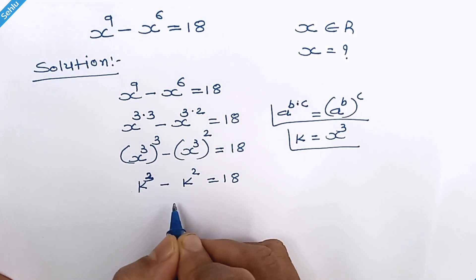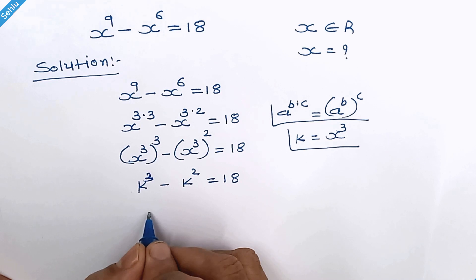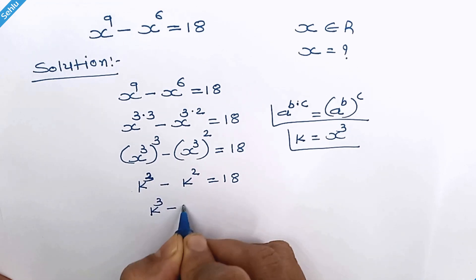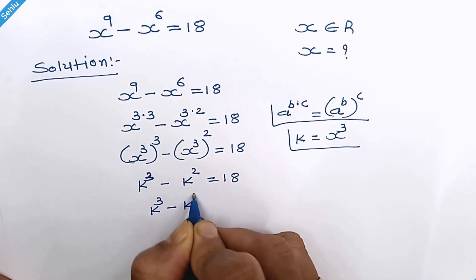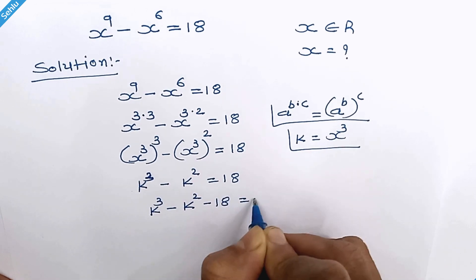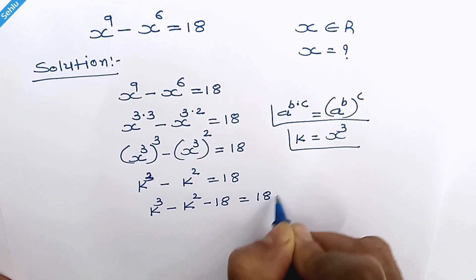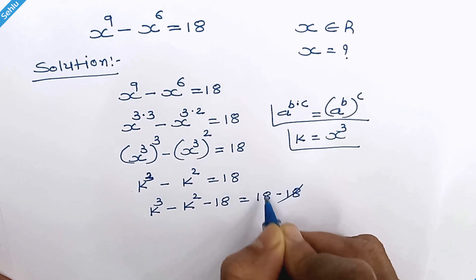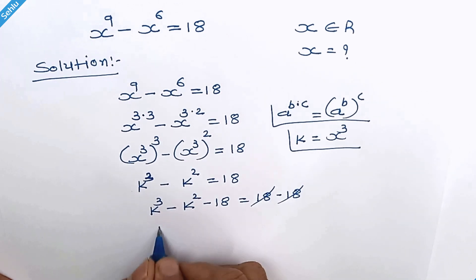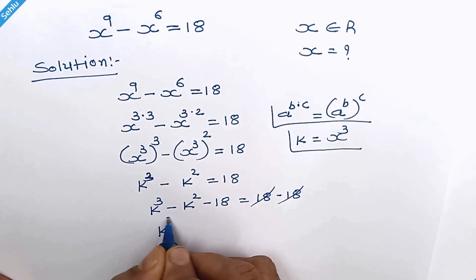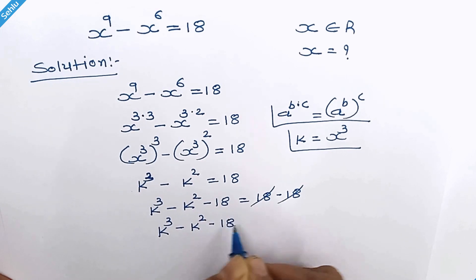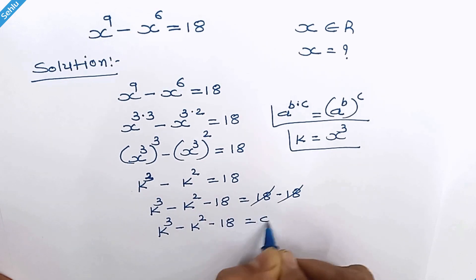So it will be k cube minus k square is equal to 18. Subtracting 18 from both sides gives k cube minus k square minus 18 is equal to 0.